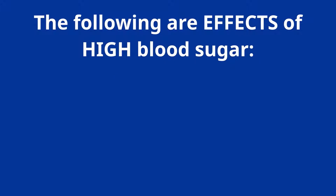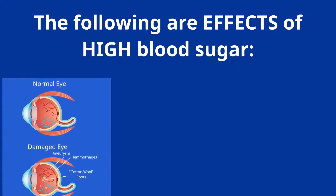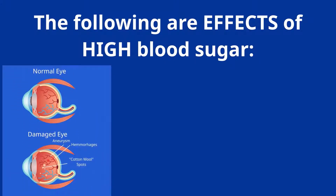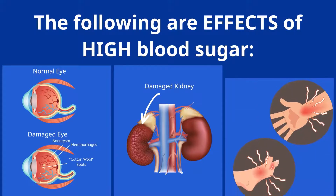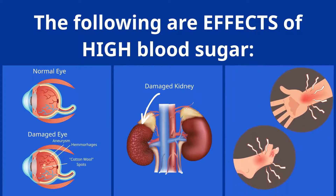The following are effects of high blood sugar: 1. Damage to the delicate vessels in the eyes, causing blindness. 2. Damage to the kidneys, which filter the blood. 3. Damage to the nerves in the hands and feet, resulting in numbness or pain, referred to as diabetic neuropathy.